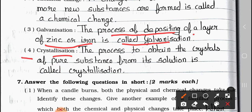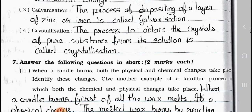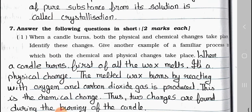Number 4: Crystallization. Answer: The process to obtain the crystals of a pure substance from its solution is called crystallization. Now see main 7: Answer the following questions in short, two marks each.